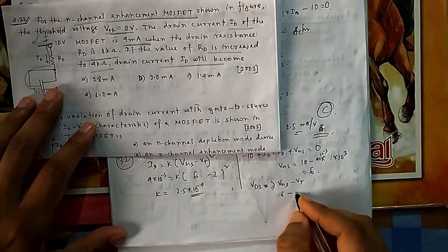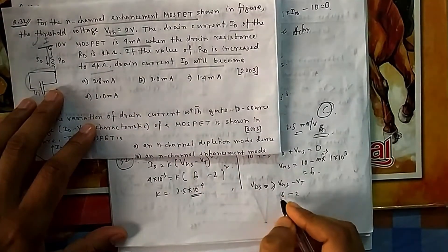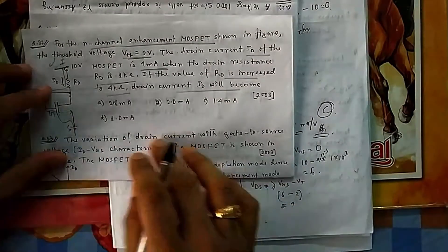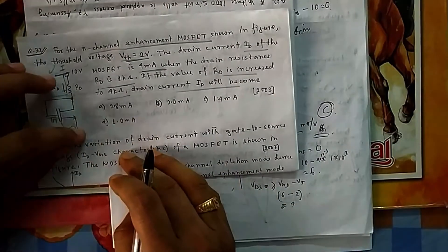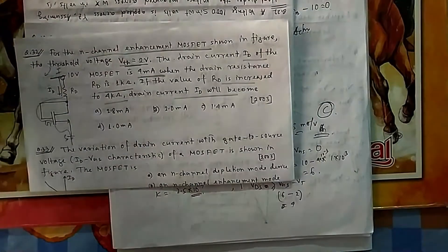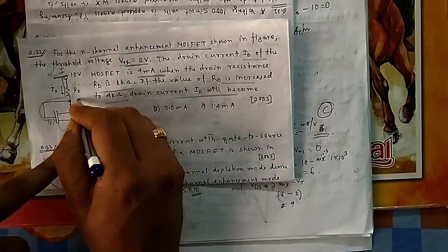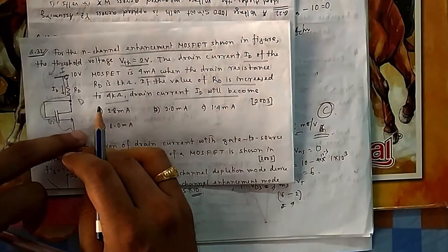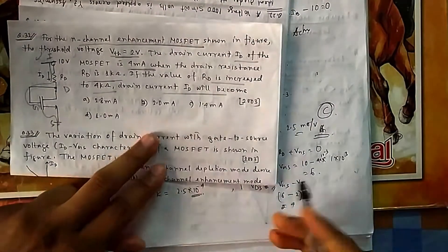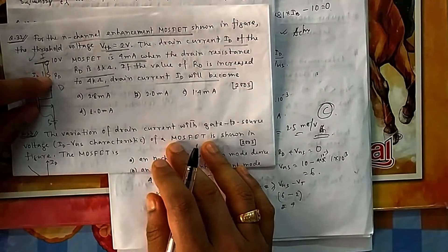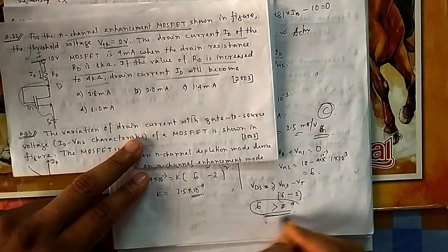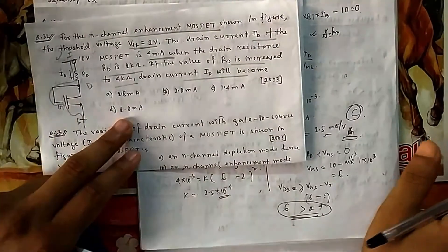Now with R_D increased to 4 kΩ: V_GS = 10 − 4×10³ × I_D. Substituting into I_D = 2.5×10⁻³ × (V_GS − 2)² gives a quadratic equation in I_D. Solving yields two values: 2.84 mA and 1.4 mA.